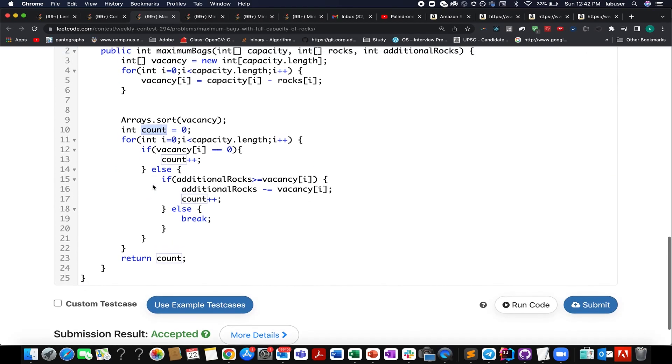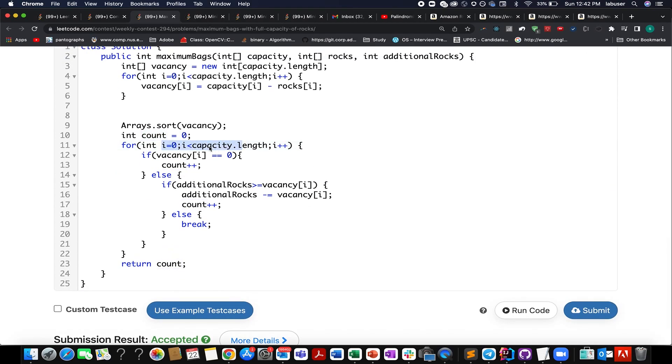I have created a count variable and I iterate over the vacancy array. If I see the current vacancy is zero, I update my count to plus one. Otherwise, I go ahead and check if my additional rock count is greater than vacancy. This condition is really important, greater than equal to vacancy. That means I have these many rocks, additional rocks available to fill in the current vacancy of that particular bag.